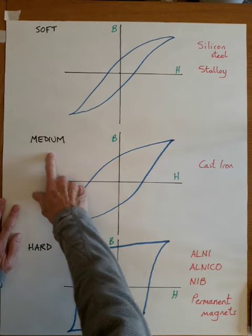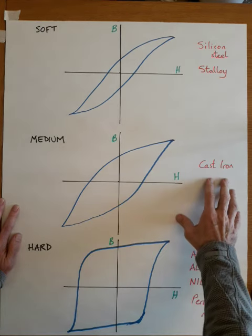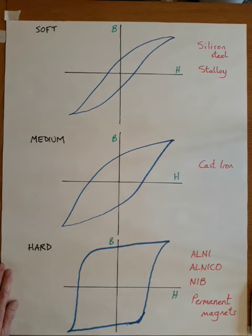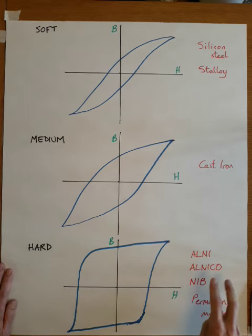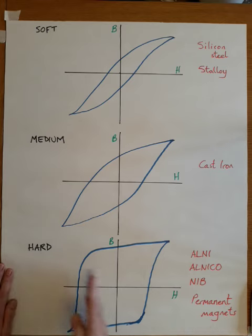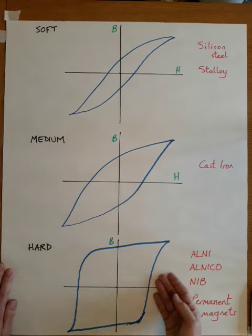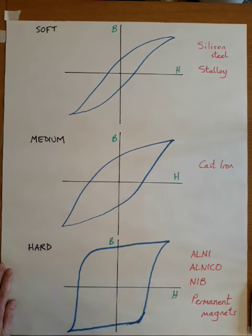A medium material would be representative of something like cast iron, which is what we would use to make the casings of motors and machines from. A hard magnetic material would represent things like ALNI, ALNICO, NIB materials which are generally permanent magnets. This indicates something which is very difficult to magnetize, demagnetize, remagnetize.